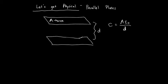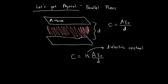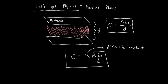If I want to make a parallel plate capacitor more useful, I can insert some material between the plates instead of having empty space or air. When I insert a material, my capacitance changes: it becomes kappa times A times epsilon naught, all divided by d. Kappa is the dielectric constant — a value typically found in a table — and it adjusts the capacitance based on the material inserted.